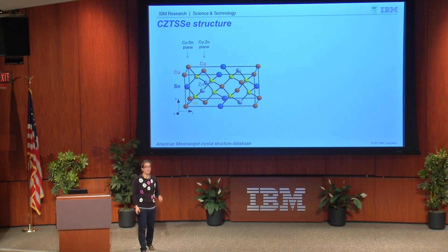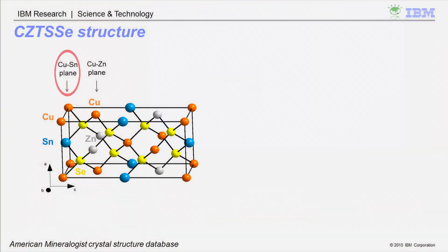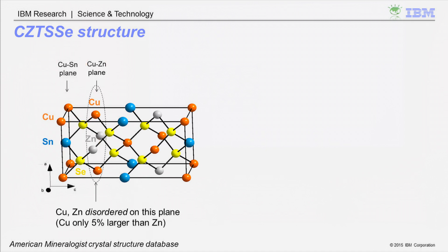In the crystal structure of CZTS, there are planes of copper and tin alternating with planes of copper and zinc, interspersed with layers of selenium. It has been experimentally shown that along the copper-zinc plane there is a lot of disorder — copper and zinc are very chemically similar, differing in covalent radius by only about 5%. As a result, when we process samples at elevated temperatures, we get significant disorder in this plane. Because copper and zinc have different valence states, substituting a copper site with a zinc atom electrically disturbs the surrounding area. These electrical disturbances are detrimental to performance, and we probe this using a technique called photoluminescence.